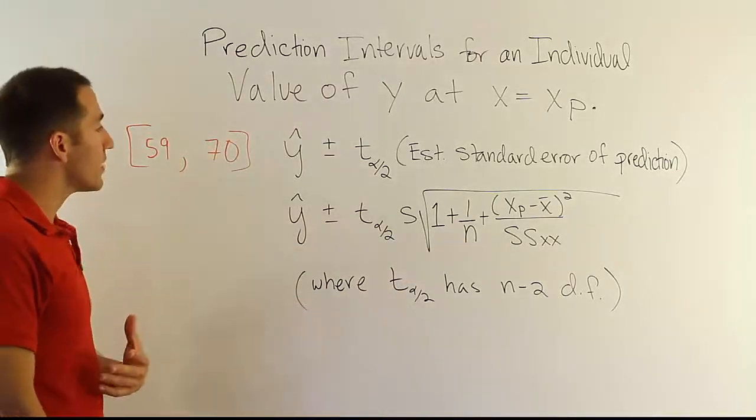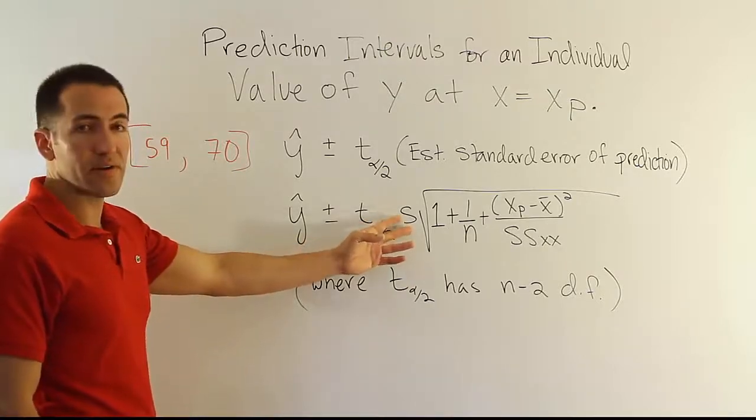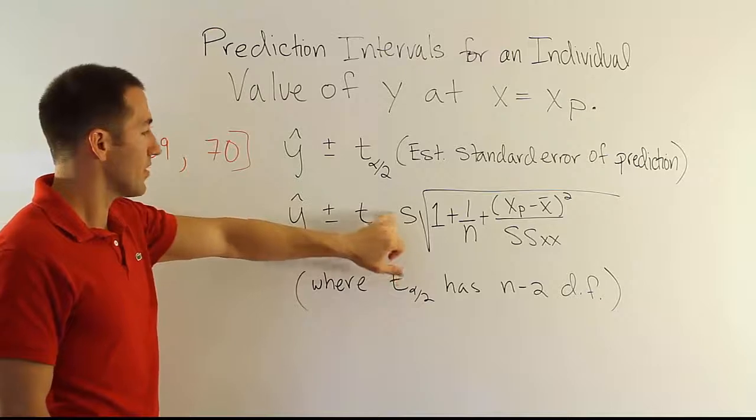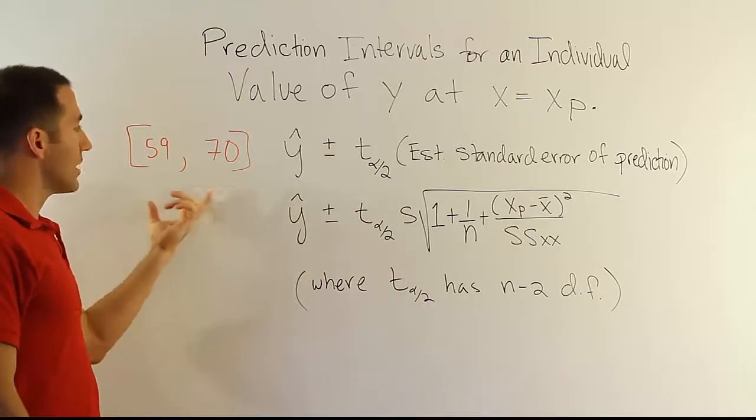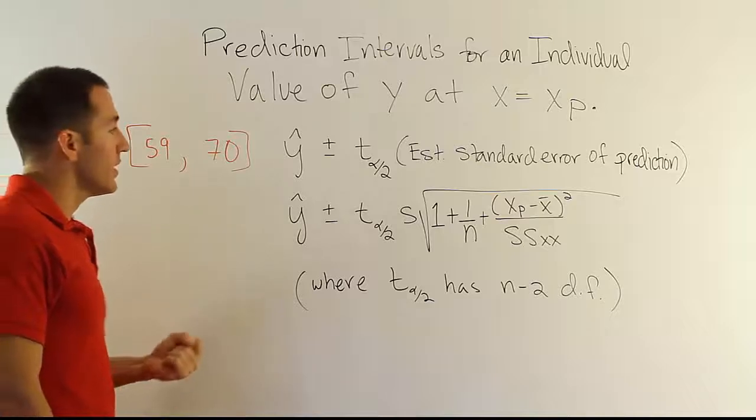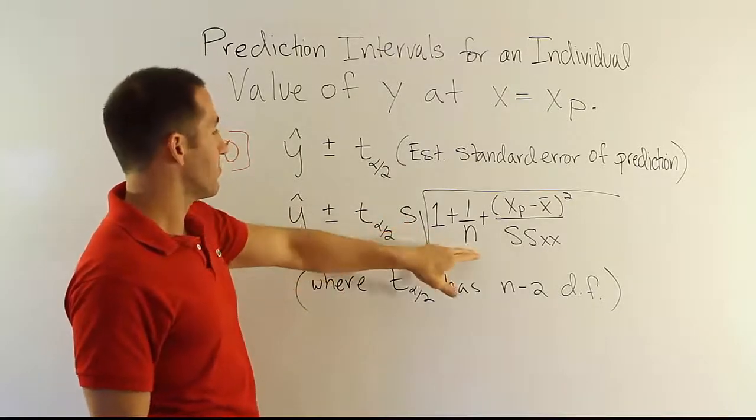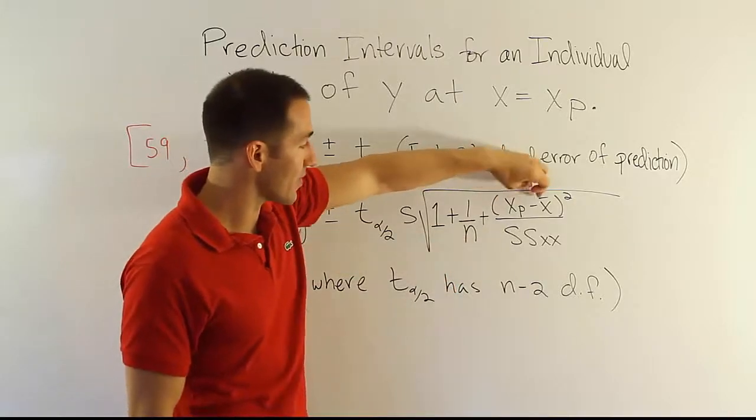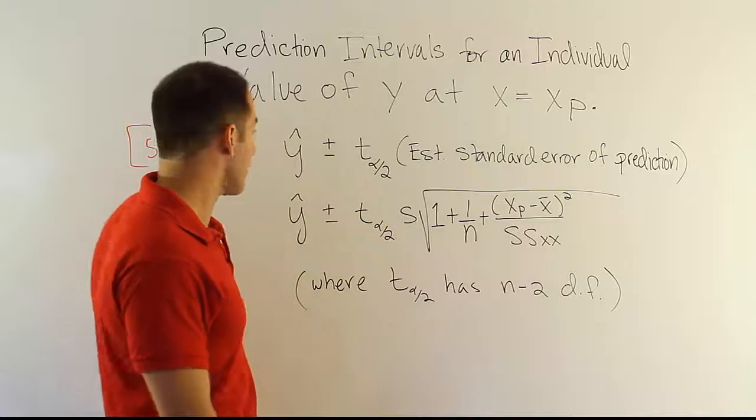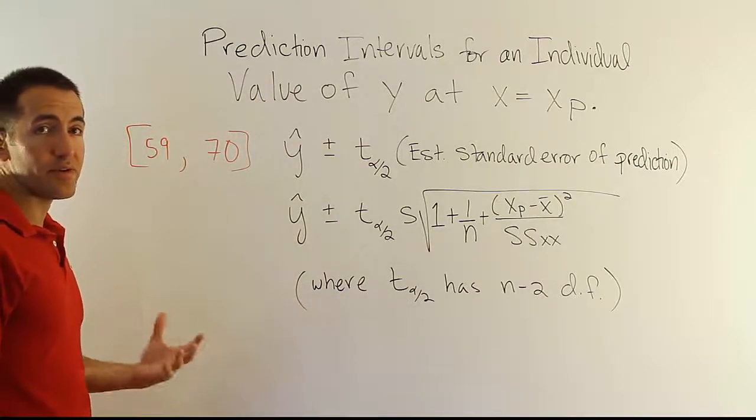If you have a really strong model, which means that the s here is kind of small, that standard deviation measure is pretty small, then you might get a smaller, more narrow interval. But generally speaking, especially if s is pretty large and you have a pretty small sample size and you don't pick the predictor value that's close to x bar, you're going to have a pretty wide interval, which virtually at times makes the intervals useless.